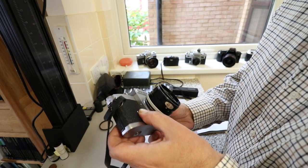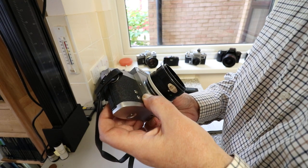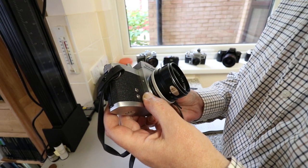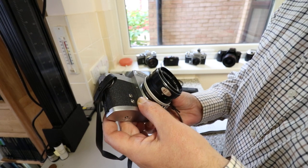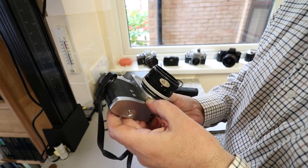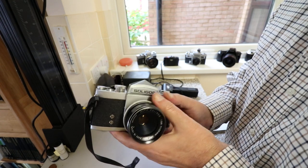We have two flash connections: one for FP, which stands for focal plane and relates to certain flash bulbs. Even when this camera was new, flash bulbs were a thing of the past. We also have an X-Sync for electronic flash.